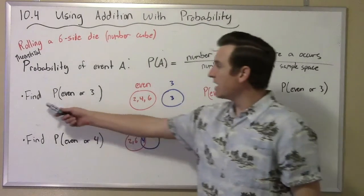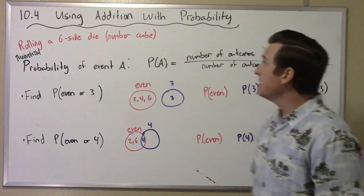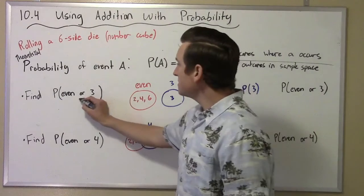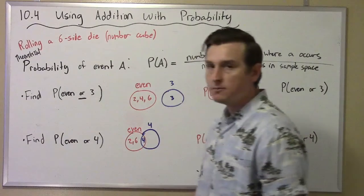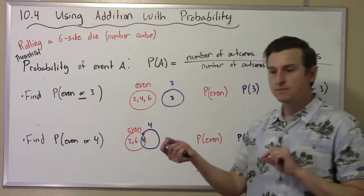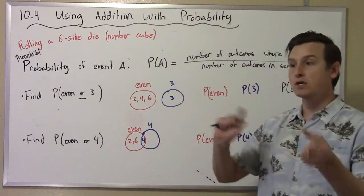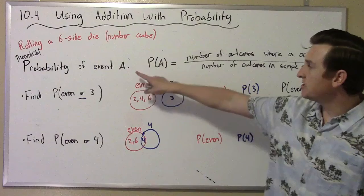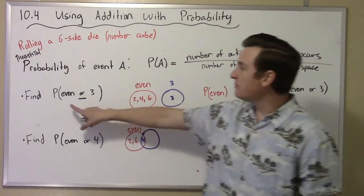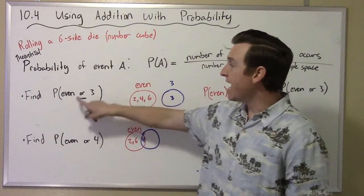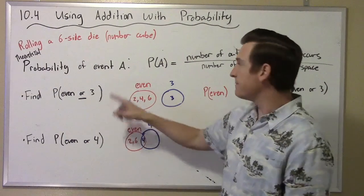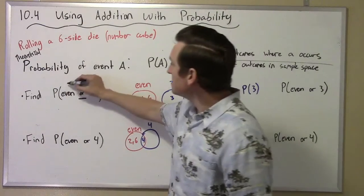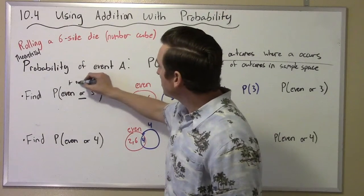We've got a couple of different things to consider. What we're talking about now is the probability of something — one event or some other event happening. So it's not just the probability of event A; it's the probability of event A or event B. This is like A or B.